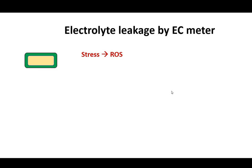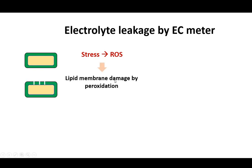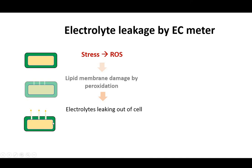Let's look at electrolyte leakage measurements by electrical conductivity meter. You can perform these under stress conditions in plants or any other cells. Under stress conditions, reactive oxygen species (ROS) are formed, which can peroxidize the lipid membranes and damage them, so the electrolytes in the cytosol can leak out.